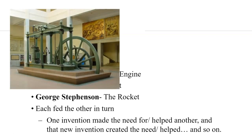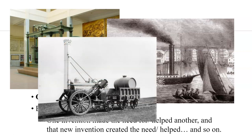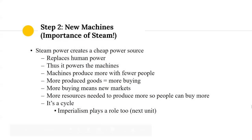You can see here images of an oil or water pump — much larger than a hand pump but capable of doing far more — a steam engine powering steamboats, and a depiction of an old-school rocket locomotive. The importance of steam cannot be understated: steam power creates a cheap power source that replaces human labor, empowering machines and producing more with fewer people. More produced goods means more buying, more buying means new markets, and new markets require more resources to produce more — creating a cycle that, as we'll see next unit with imperialism, generates a constant need for more resources to create more goods.